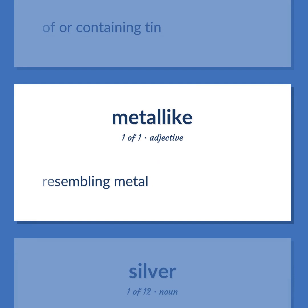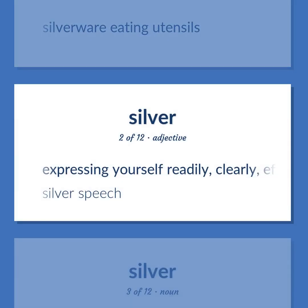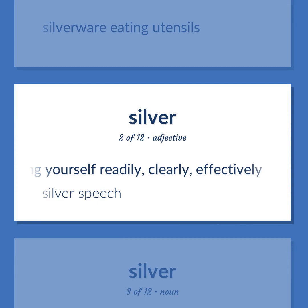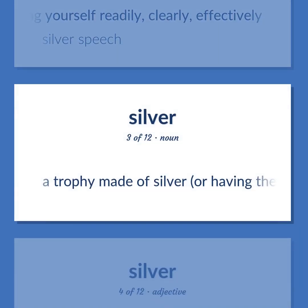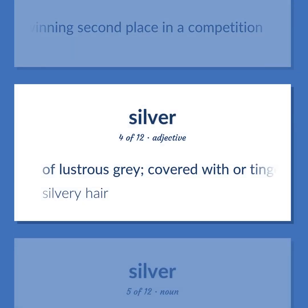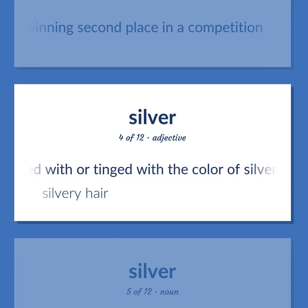Metallic (adj): resembling metal. Silverware: silver eating utensils. Silver (adj): expressing yourself readily, clearly, effectively — silver speech. Silver medal: a trophy made of silver or having the appearance of silver, usually awarded for winning second place in a competition. Silvery: of lustrous grey, covered with or tinged with the color of silver — silvery hair.